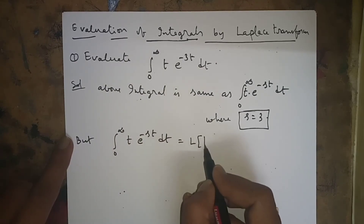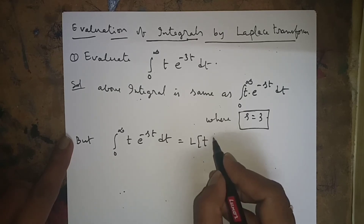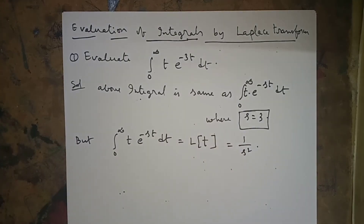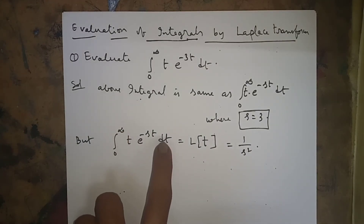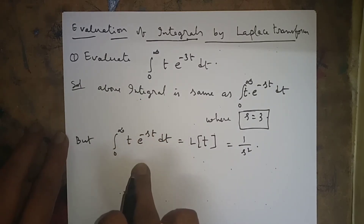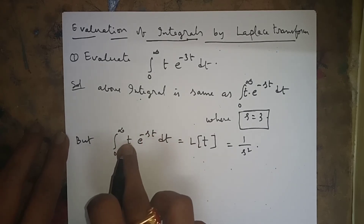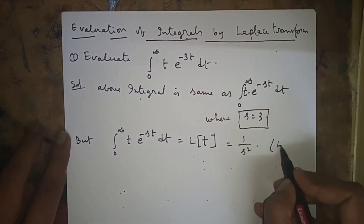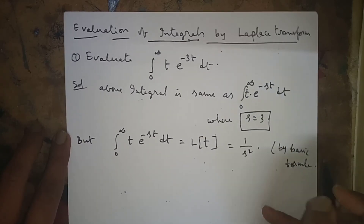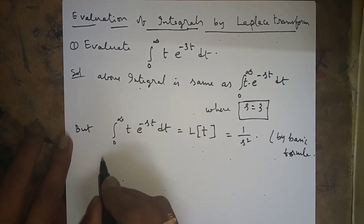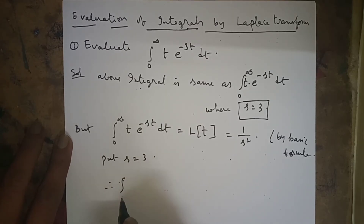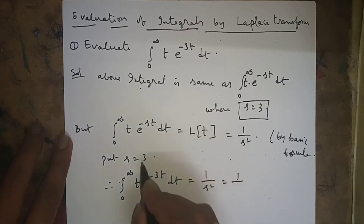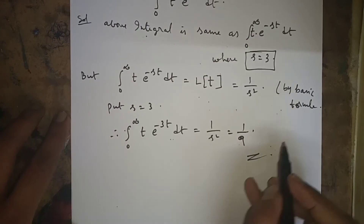L{f(t)} = ∫₀^∞ f(t) · e^(-st) dt. Here f(t) = t, so L{t} = 1/s². Putting s = 3: the answer is 1/s² = 1/9.